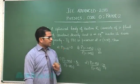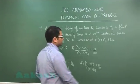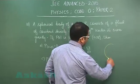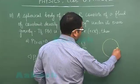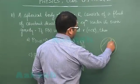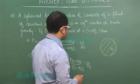Question number 11 is again related to gravitation. It says a spherical body of radius R consists of a fluid of constant density. Everywhere the density is uniform. N is in equilibrium under its own gravity.